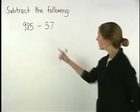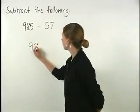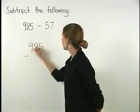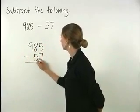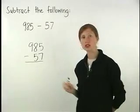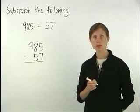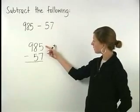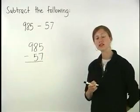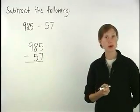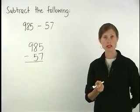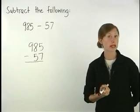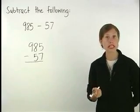First, line up 985 and 57 so that their units digits are in the same column. When we try to subtract in the units column, notice that we have 5 minus 7. Since we can't take away 7 ones from 5 ones, we instead take away 7 ones from 15 ones.